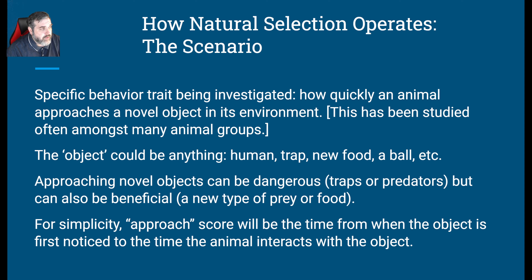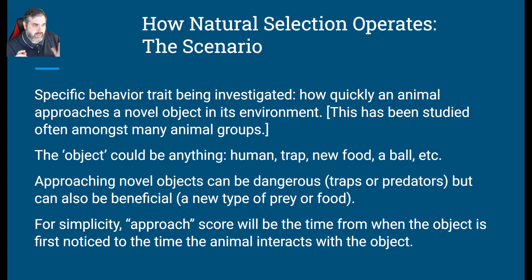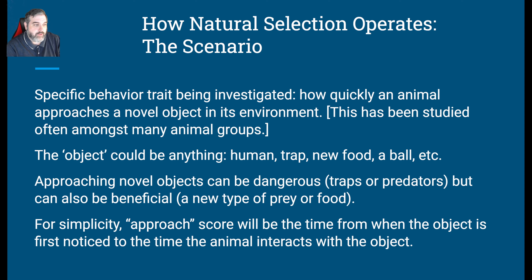So the specific behavior trait being investigated is how quickly an animal approaches a novel object — novel in this case meaning new. So we have this creature in its environment; it notices something is different, never seen this before, doesn't know what it is. This could be a human, another animal, a trap we've set, maybe we're trying to catch it or kill it, or maybe it's a trap by another animal — some animals do lay traps for others, spiders for example. New food, a ball, just something. There's a new object here. How does the animal respond to this novel concept?